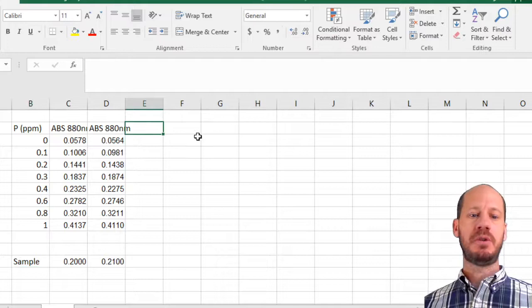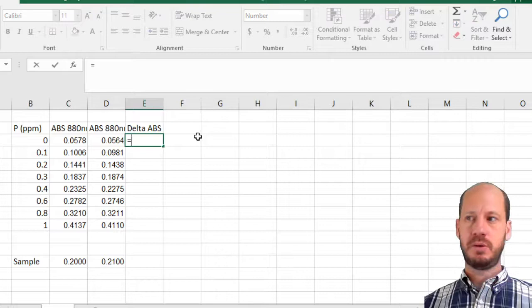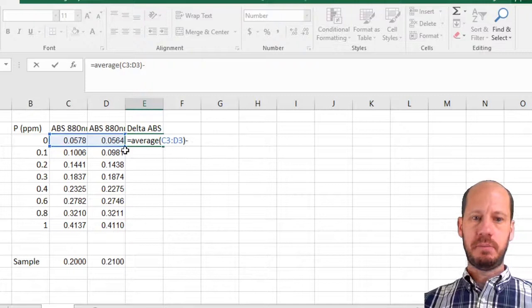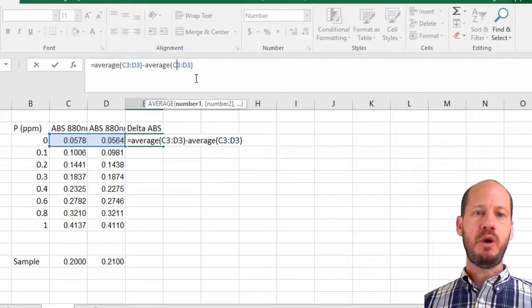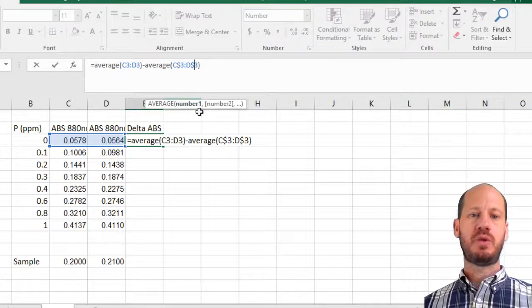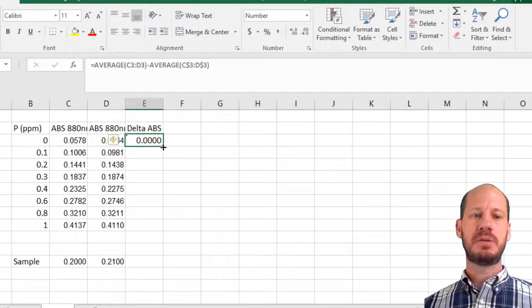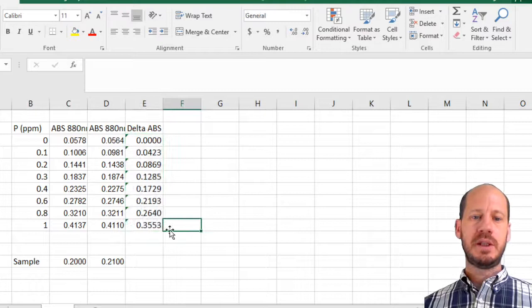First we calculate the delta absorbance. The formula is: average of the zero blanks minus the blanks itself. This will become zero. Now you fix the subtraction so you're always subtracting the blanks. The dollar sign means that when you drag this formula around the spreadsheet, it will always be subtracting the zero. Because the zero still has a small amount of absorption, you have to subtract it from all your samples.